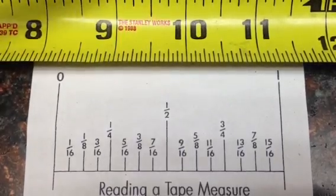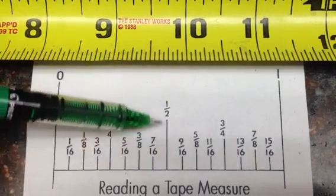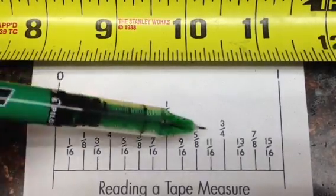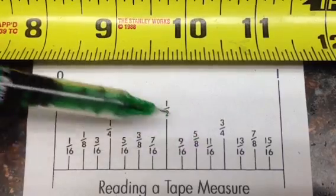Let's start with that longest line. That's your half inch, so you basically have two halves make a whole.